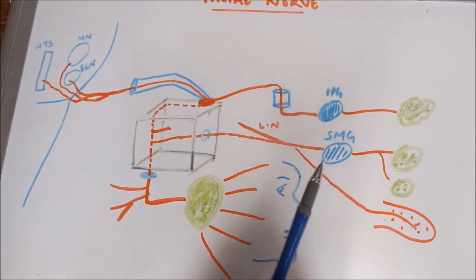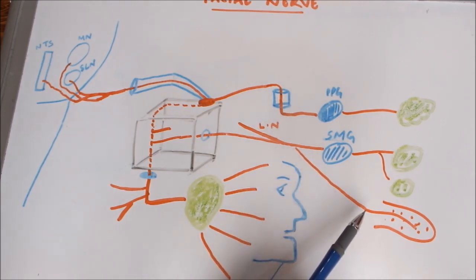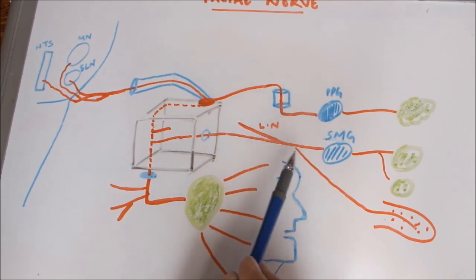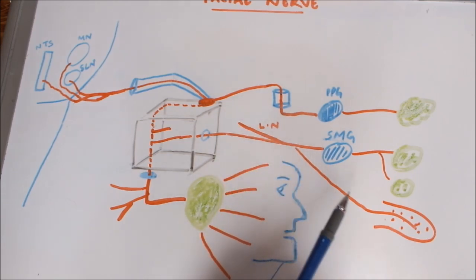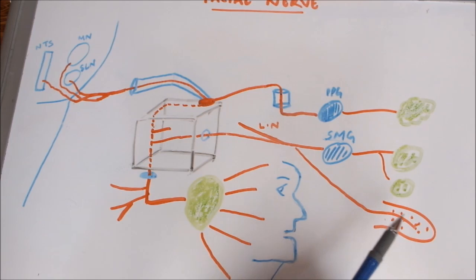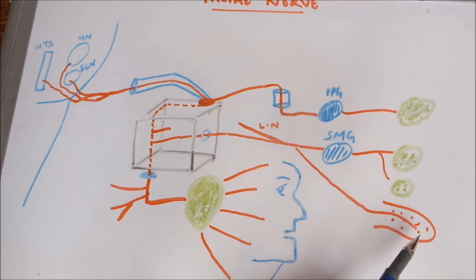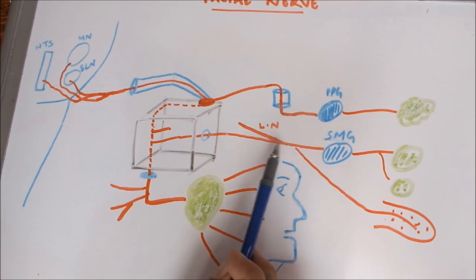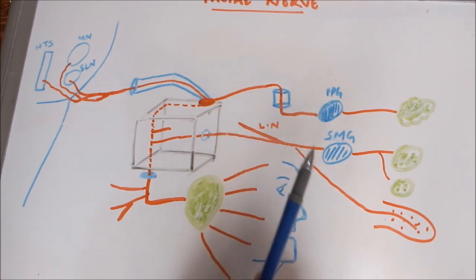The chorda tympani branch travels along the lingual nerve and also brings taste sensations from the anterior two-thirds of the tongue. These taste fibers relay along with the lingual nerve into the trigeminal nuclei.